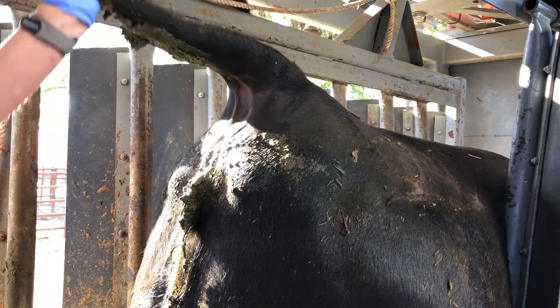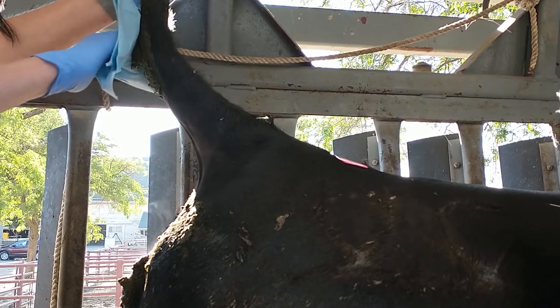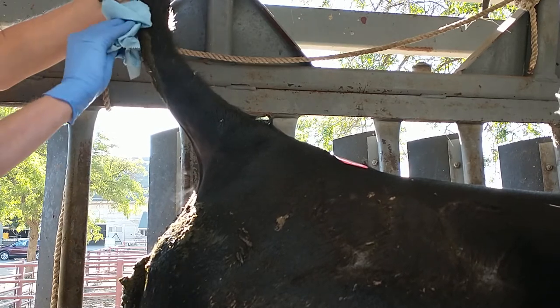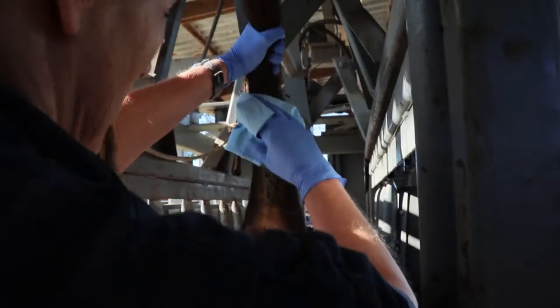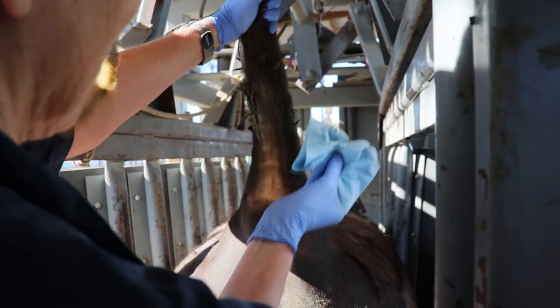Make sure you have adequate restraint for a beef cow. That typically means a cattle chute. Position yourself behind the cow and lift the tail. This requires more force than you would expect. They do have pretty strong tails. If there's manure, you want to clean the underside of the tail with a paper towel.